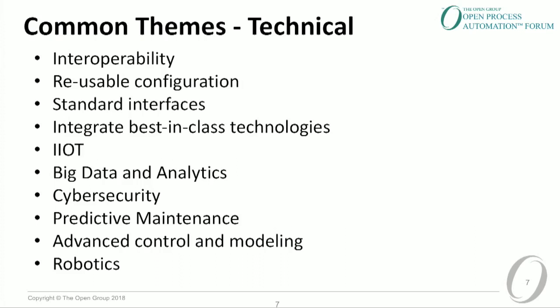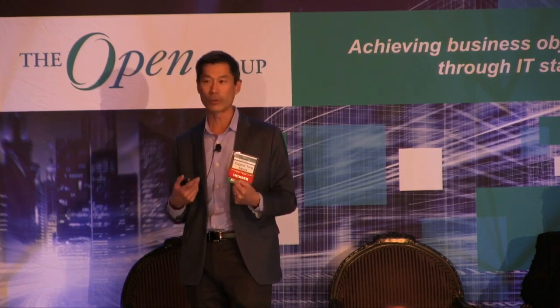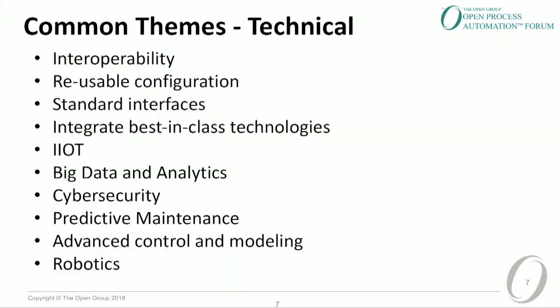Among those themes, we categorized them into technical themes and business outcomes. Interoperability was a major one — most end users and manufacturers had disparate control systems within a factory not talking to each other, and we really want these systems to integrate seamlessly. Reusable configuration was another theme — a lot of energy has gone into the code that runs our factories, representing IP, and we'd like to make it portable across platforms. Standard interfaces is one that means a lot to me personally — I spent a lot of time doing custom APIs and custom drivers, and the need for standard interfaces was a strong driver for putting this forum together.